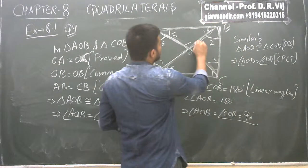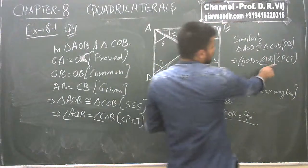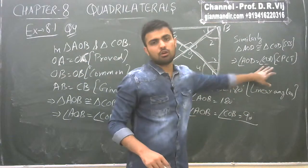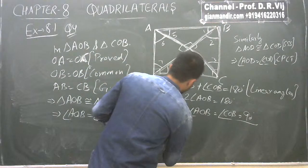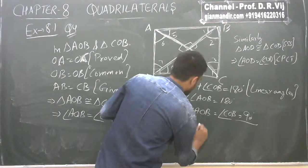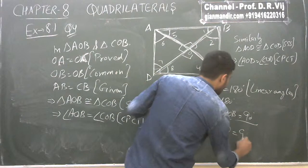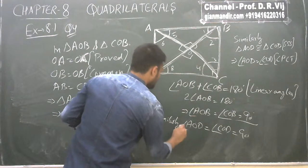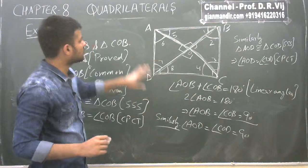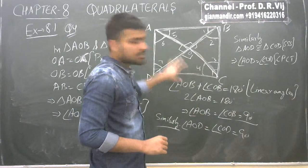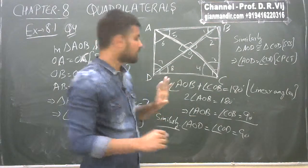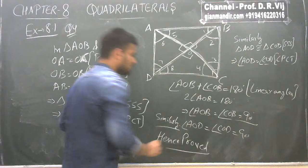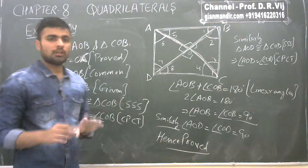Similarly, angle AOD plus angle COD equals 180 degrees by linear angles, and since they are equal, angle AOD equals angle COD equals 90 degrees. So all four angles at the intersection are 90 degrees. We have proved that diagonals are equal, diagonals bisect each other, and diagonals bisect each other at 90 degrees — hence proved. This was the fourth question, a bit lengthy but straightforward.